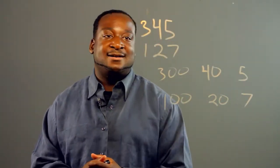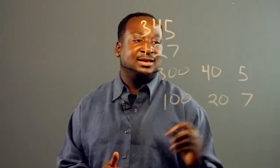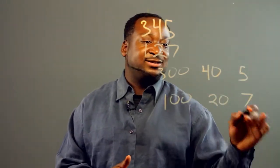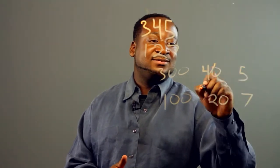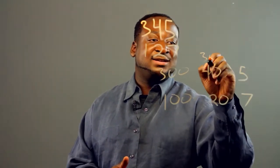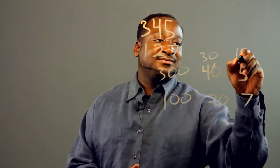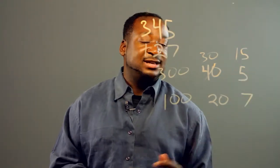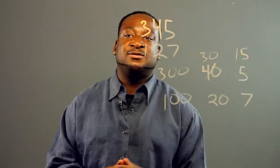Now when we do the subtraction, you would take 1 away from here so we get 30, and over here you get 15 — you move the 10 over.